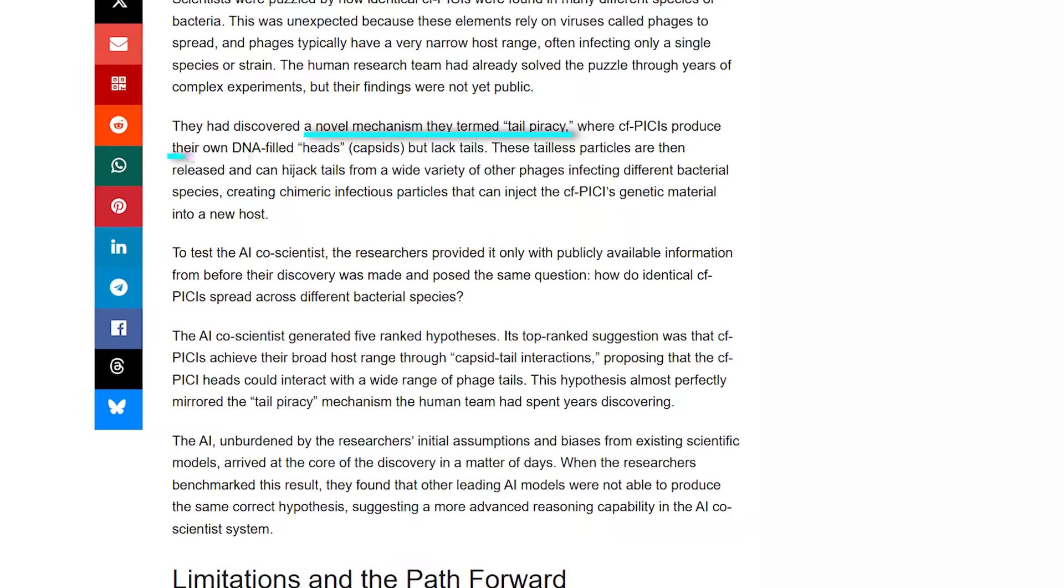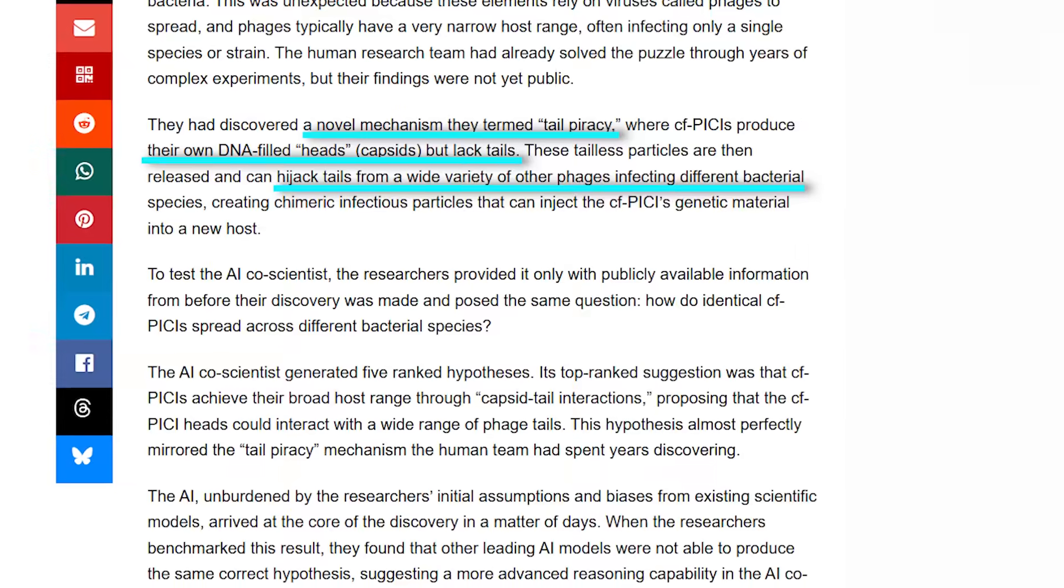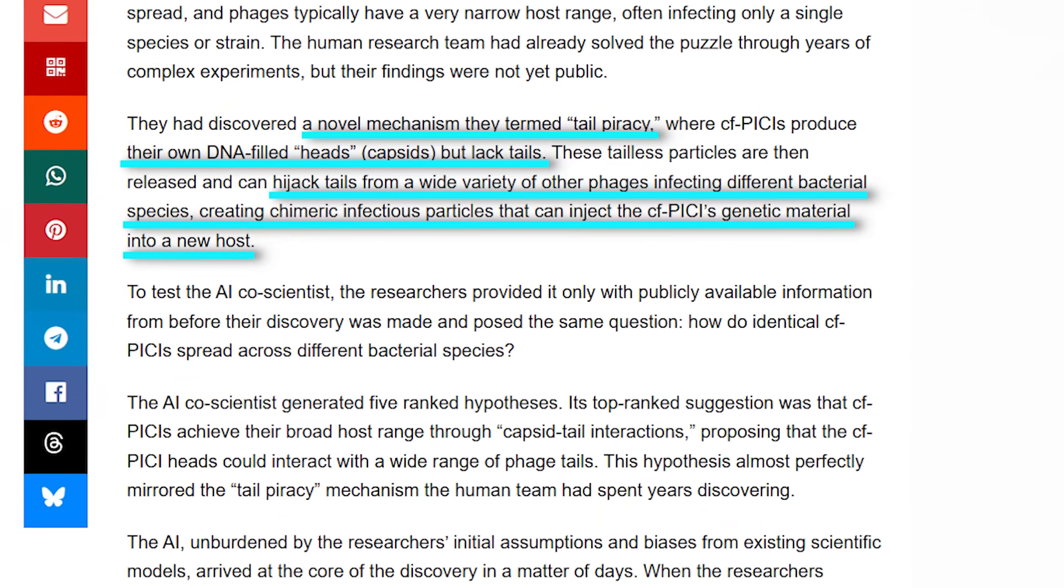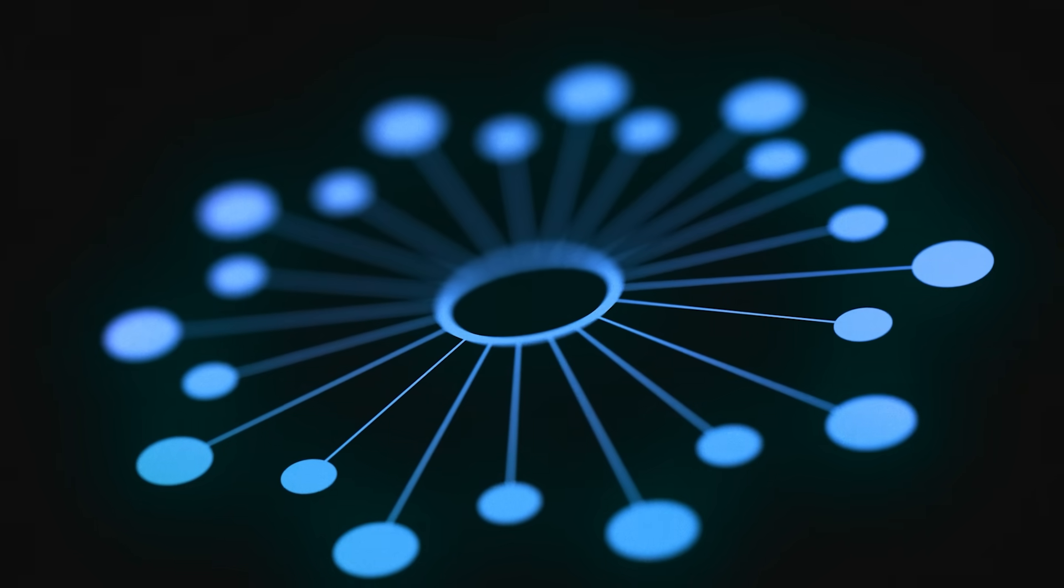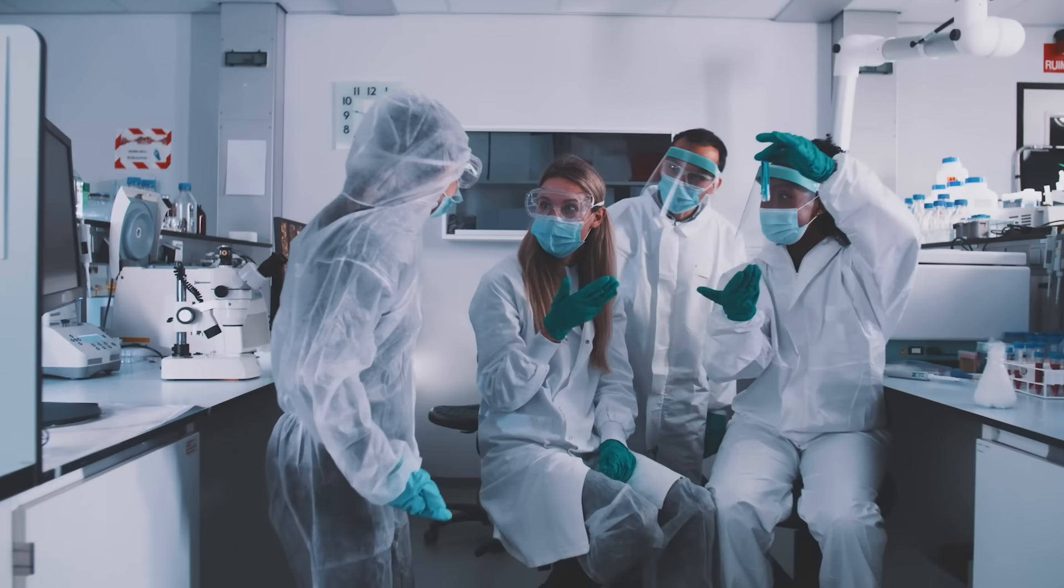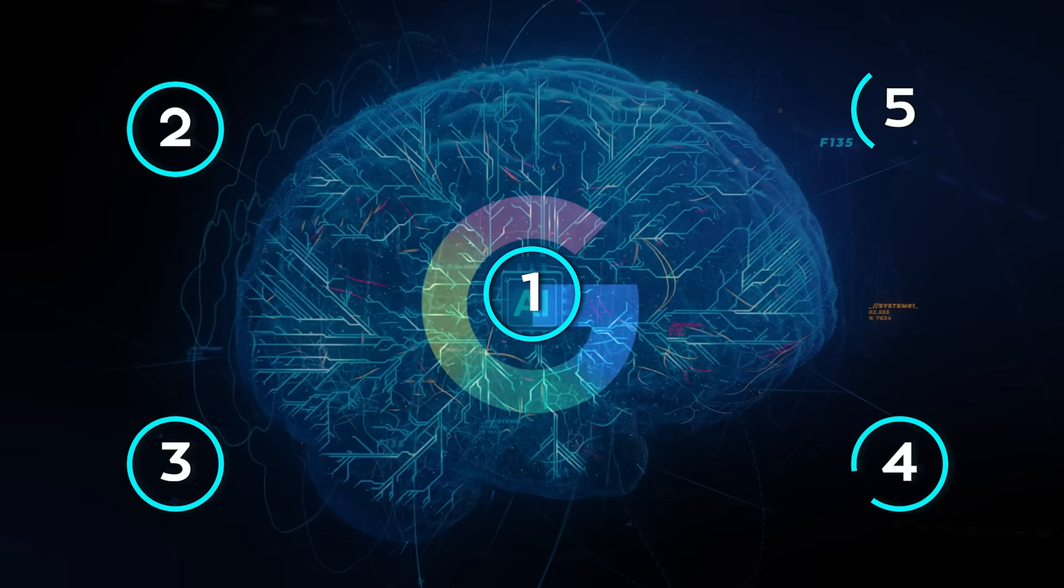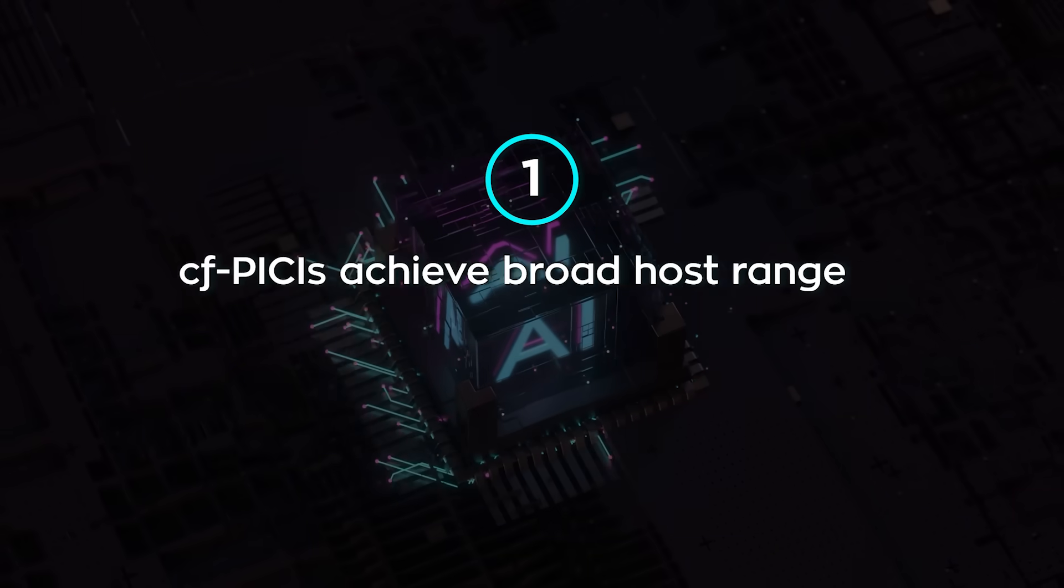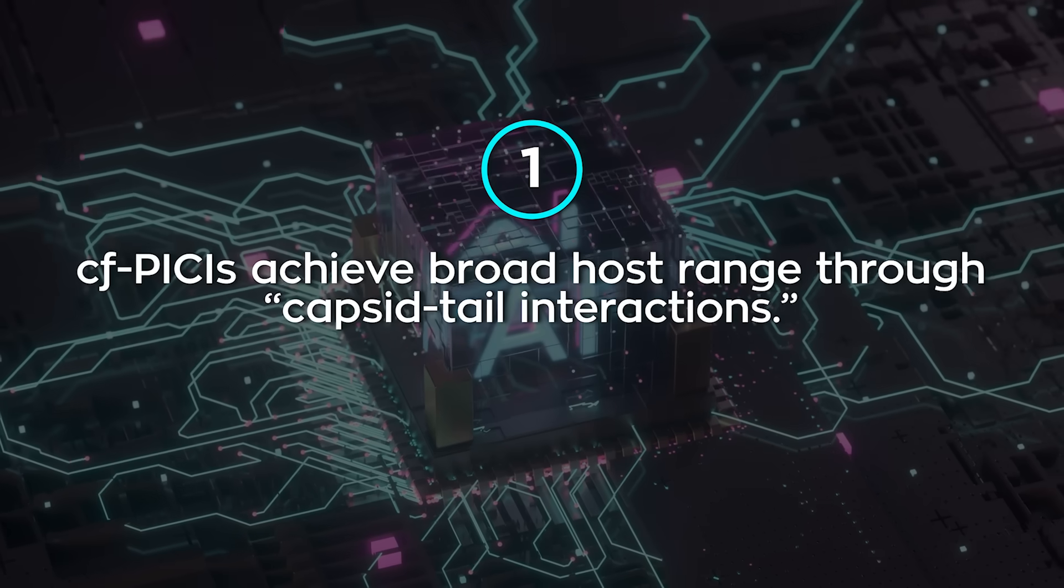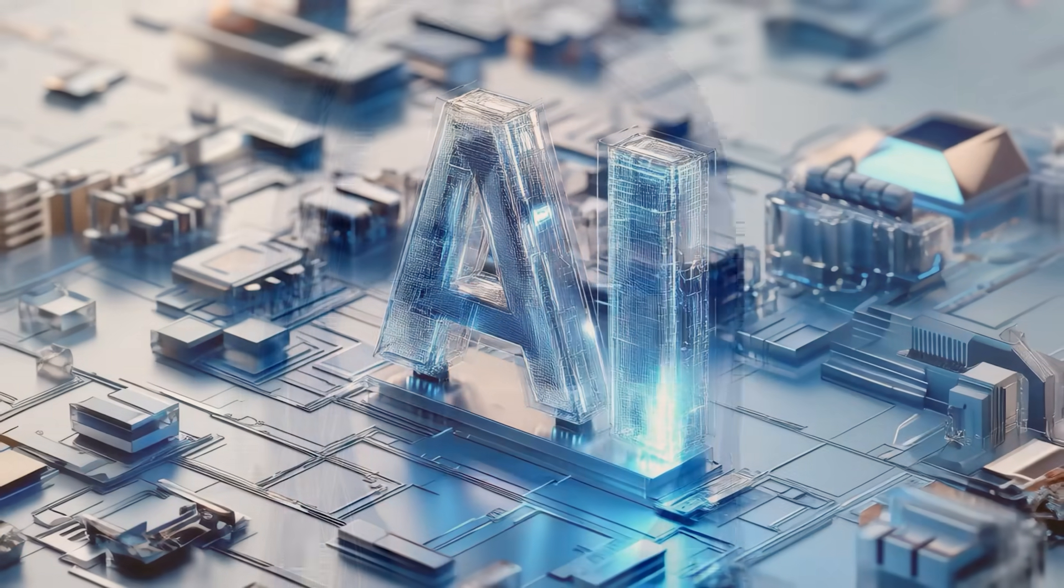These CFPICIs build their own DNA-filled heads, but no tails. Then they hijack tails from other phages, even across species, to form hybrid particles that inject their DNA into new hosts. The question was simple. Could the AI figure that out without seeing the answer? The researchers fed it only pre-discovery data and asked how CFPICIs could spread across species. The AI produced five ranked hypotheses. The top one? That CFPICIs achieved broad host range through capsid-tail interactions. That's basically the same mechanism. Tail piracy.